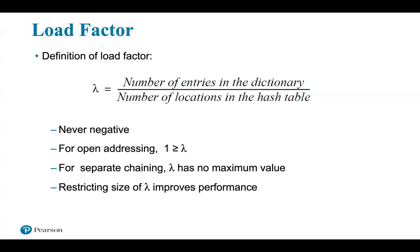Notice that lambda is 0 when the dictionary and hash table is empty. The maximum value of lambda depends on the type of collision resolution you use. For open addressing schemes, lambda's maximum value is 1 when the hash table is full — each entry in the dictionary uses one element in the hash table. Note that the number of elements in the available state does not affect lambda. For separate chaining, the number of entries in the dictionary can exceed the size of the hash table, so lambda has no maximum value.